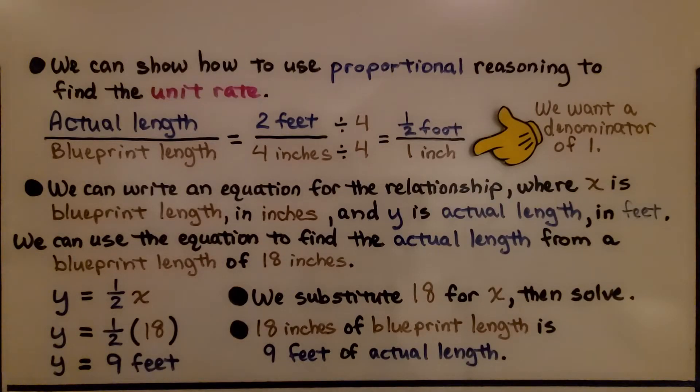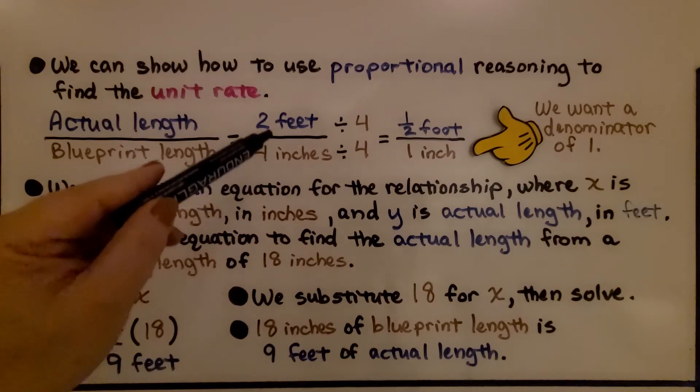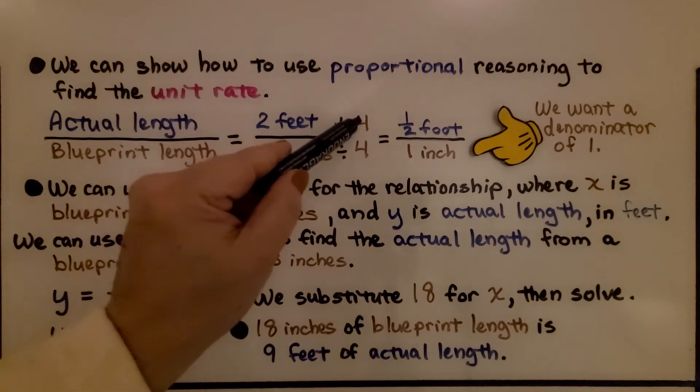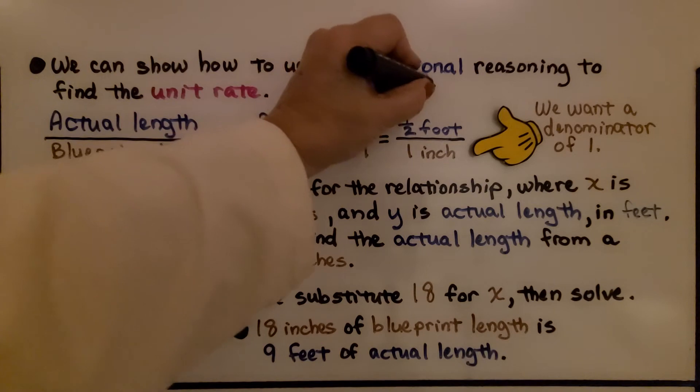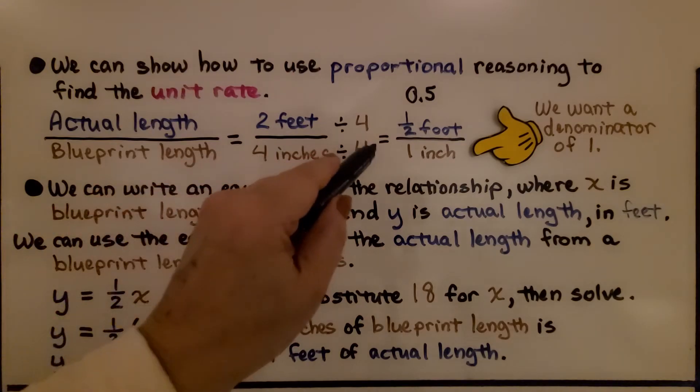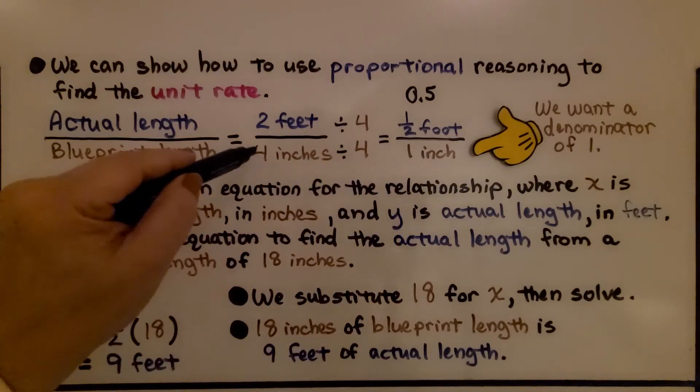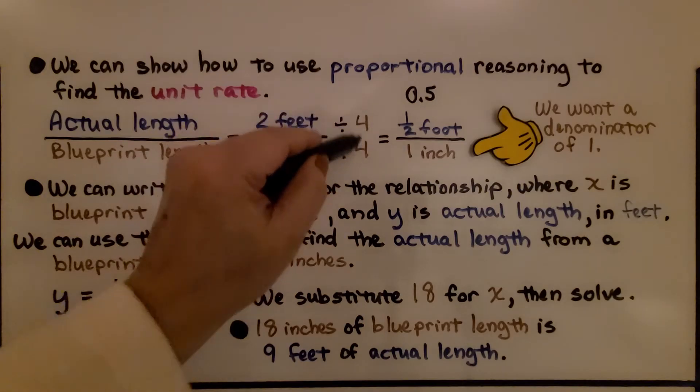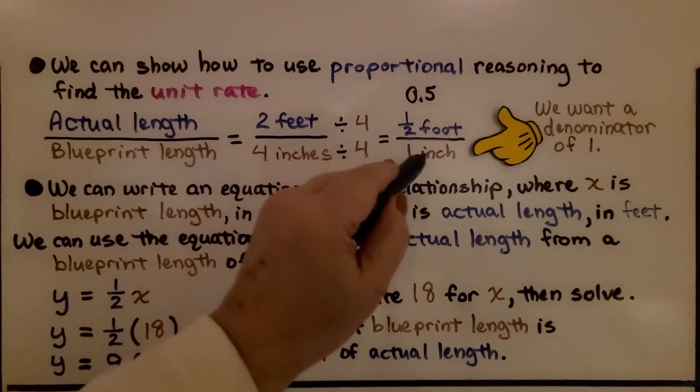We can show how to use proportional reasoning to find the unit rate. We have the actual length over the blueprint length. Remember, we flipped them around from the table. We have 2 feet to 4 inches. If we divide 2 feet by 4, we're going to get a half foot. We could even write this as 0.5 feet, couldn't we? Because that would be a half. We could use a decimal. And 4 inches divided by 4 is 1 inch. We want a denominator of 1 and we divided it by this 4. Because we're dividing it by this 4 so that we get 4 divided by 4 to get a 1 as our denominator.